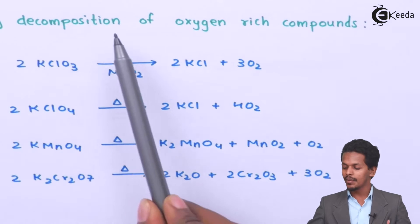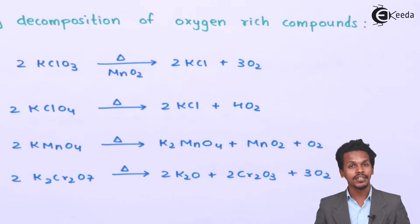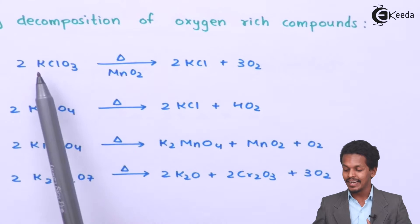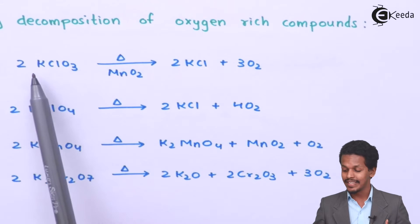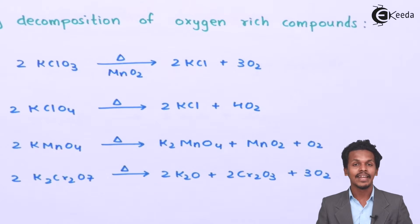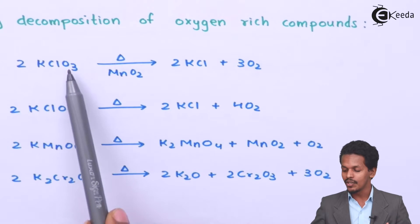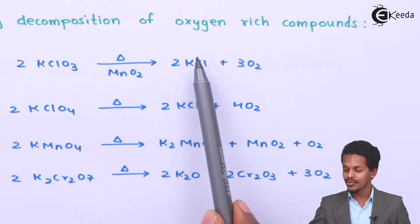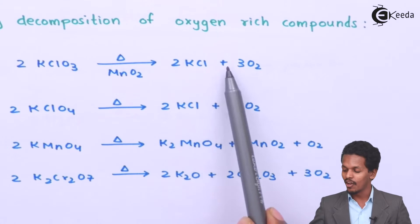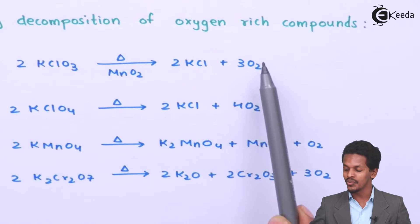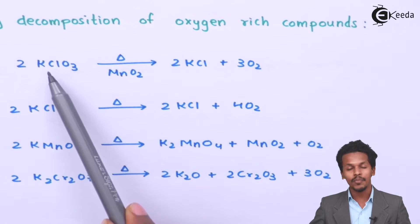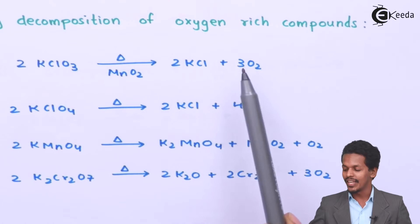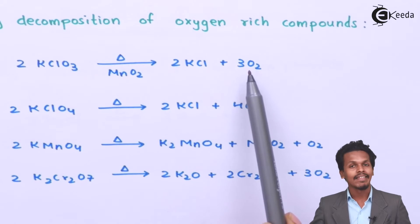The next method is by decomposition of oxygen-rich compounds. Here we talk about the decomposition reaction of KClO3, which is potassium chlorate. Two moles of KClO3, when heated, produces 2 moles of KCl along with 3 moles of O2. This is a method where decomposition of potassium chlorate gives us oxygen.